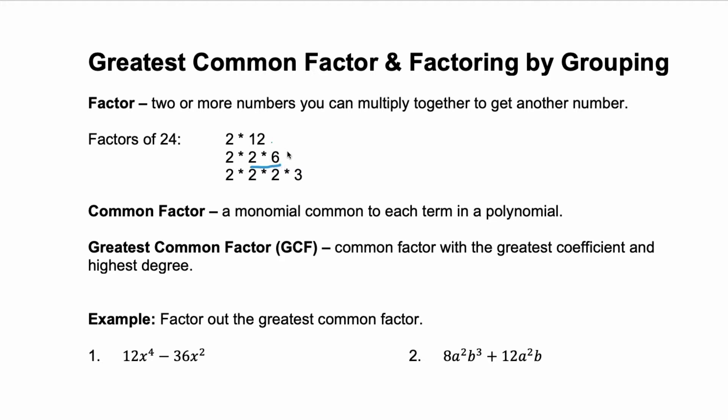But again, 6 isn't prime, so you can factor 24 even further. You can factor it all the way to 2 times 2 times 2 times 3. This would be called prime factoring, and sometimes when you're factoring for polynomials, you'll need to prime factor until you get more comfortable with factors and what they have in common.